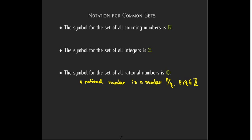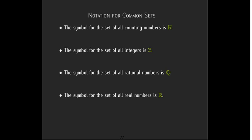And then the symbol for the rational numbers is a stylized Q. Q should remind us of quotient because the definition of a rational number is a number that you can write as P over Q, where both P and Q are integers. And then the symbol for all real numbers is just this stylized R.